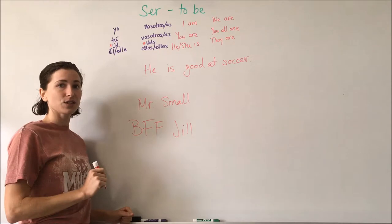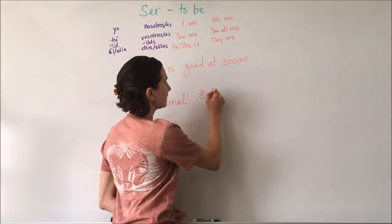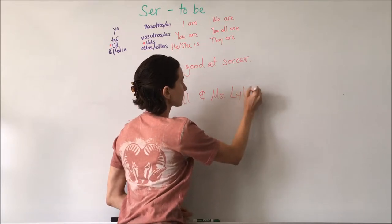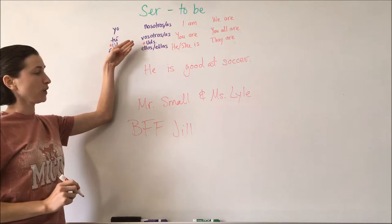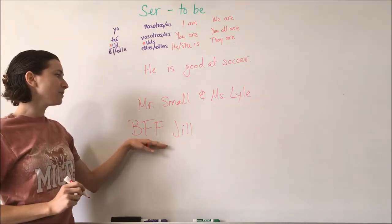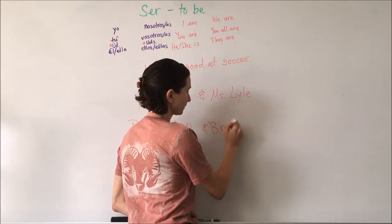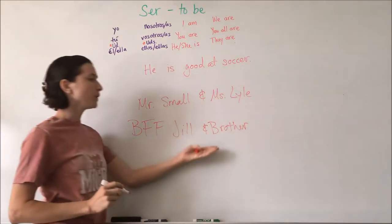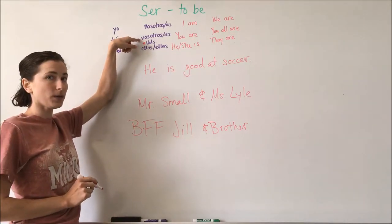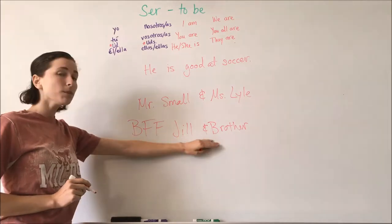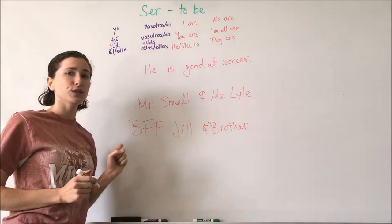It's a familiar conversation. If I'm talking to Mr. Small and Ms. Lyle, I will use ustedes because it's formal. And if I'm talking to my BFF Jill and my brother, I will use vosotros because it's familiar. I have a more personal relationship with my BFF Jill and my brother, so I'll use vosotros.